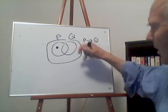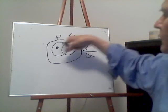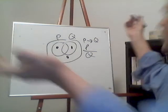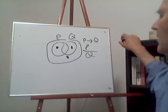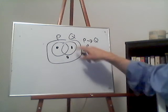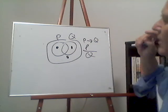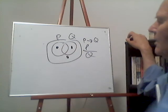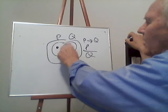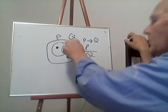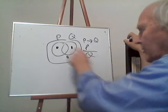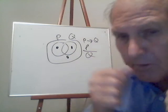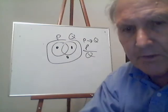Now we diagram the second premise, P. P is true when P is true and false when P is false, so we darken outside the P circle. Now we've diagrammed both premises. Do we know Q is true? Is the only section we can be in inside the Q circle? Yes — there's only one section left unshaded, and that section is inside the Q circle. The picture tells us Q is true. That's a valid argument. I'll continue this in the next lecture.